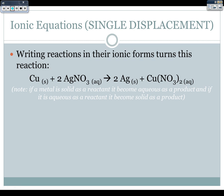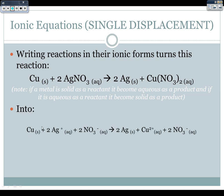We're going to break up any aqueous compounds but leave any solids, liquids, and gases. So silver(I) nitrate and copper(II) nitrate are both broken apart: copper solid plus 2 Ag+ aqueous plus 2 NO3- aqueous, making 2 Ag solid plus Cu2+ plus 2 NO3 1-.